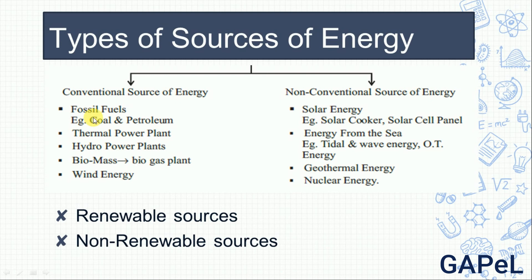For example, coal and petroleum are conventional sources. After a certain number of years, they will be used up and exhausted. Once they run out, we cannot get them back. So coal and petroleum are non-renewable sources.